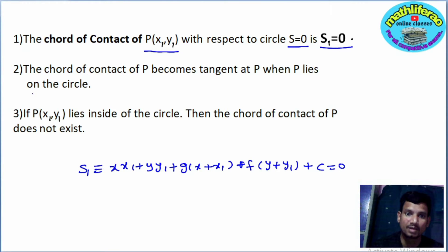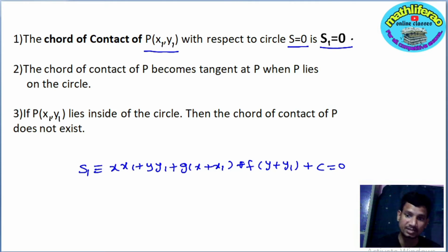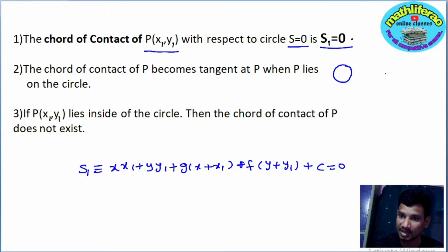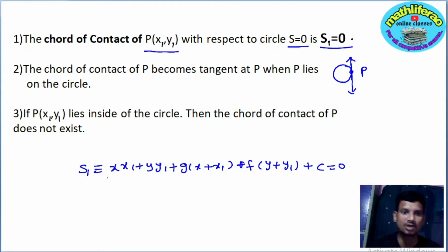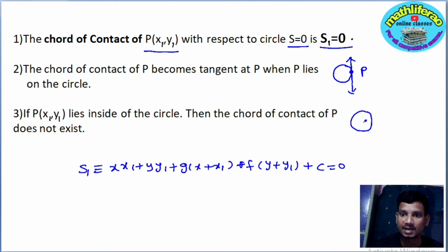Second point: the chord of contact of P becomes the tangent at P when point P lies on the circle. When the external point P lies on the circle, the chord of contact becomes the tangent to the circle. Third point: if P(x₁, y₁) lies inside the circle, then the chord of contact of P does not exist. When point P is inside the circle, the chord of contact does not exist. These are the three points related to chord of contact.